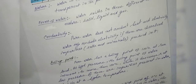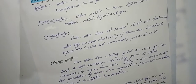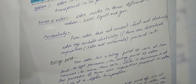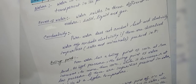Some properties of water. Nature: Water is colorless, tasteless, odorless, and transparent in its pure form. Forms of water: Water exists in three different states in nature — solid, liquid, and gas.